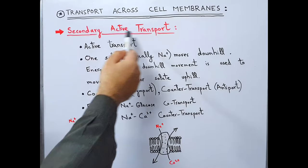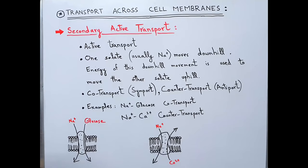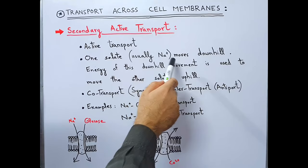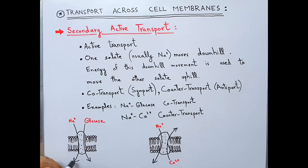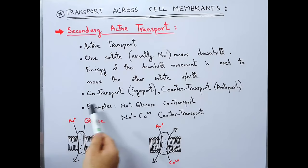Secondary active transport is also an active transport, which means it uses energy, but energy is not used directly in the form of ATP. Instead, one solute — usually sodium — moves downhill, and the energy of this downhill movement is used to move another solute uphill against the concentration gradient. So energy is used, but derived from the movement of one solute and used in the movement of another.